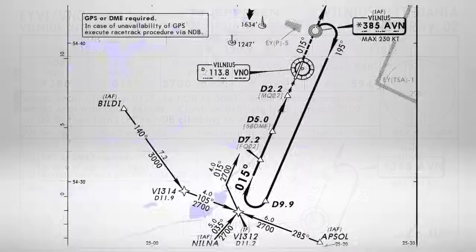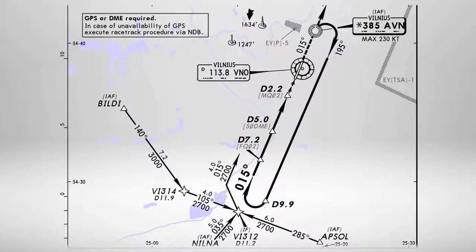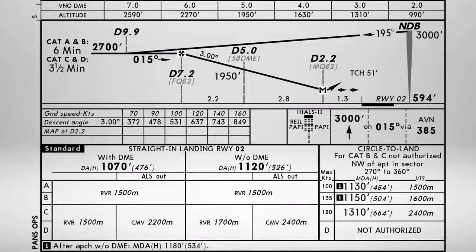Here is our approach scheme. After the beacon we will turn right to heading 015 until 9.9 miles from Victor November Oscar, Vilnius VOR. Then back on final course 095 until 7.2 miles from Victor November Oscar. We will stop descent following this table, keeping our vertical speed from this table. Our minimums for today will be 1,070 feet, and for category A, the minimum runway visual range will be 1,500 meters.